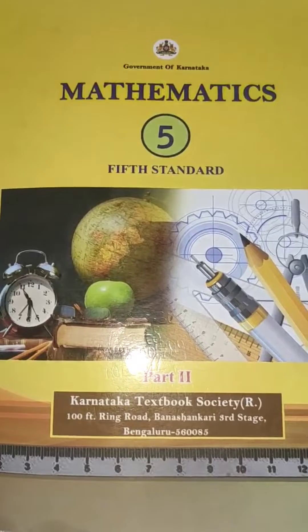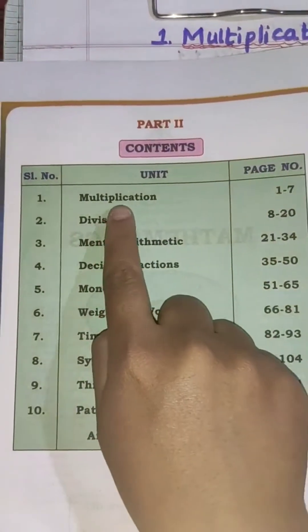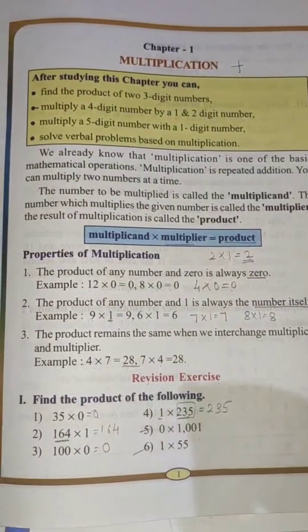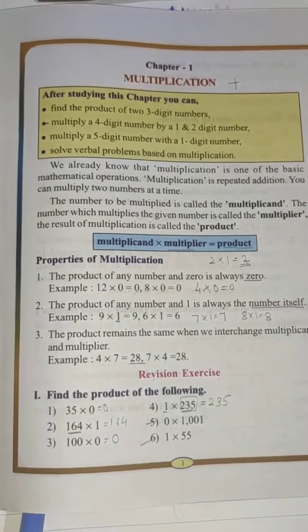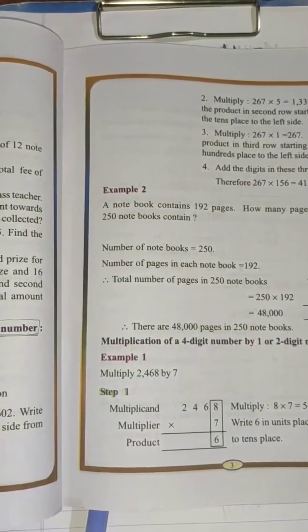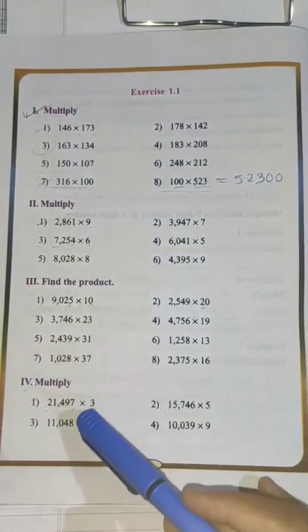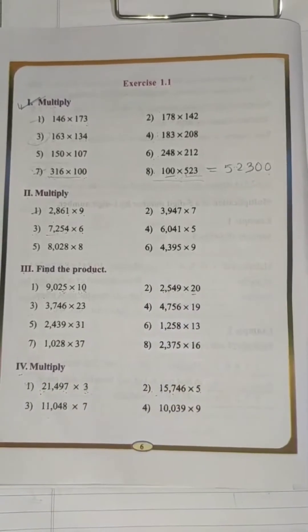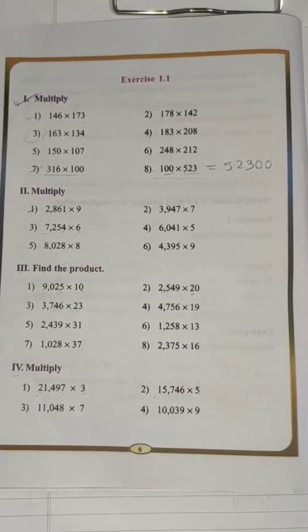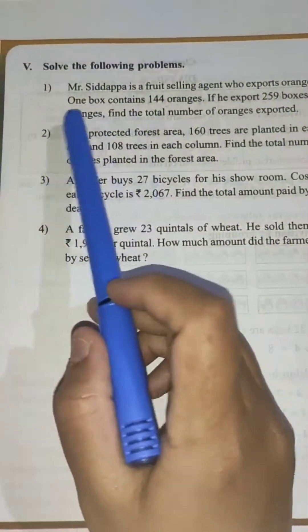Hi, hello children, how are you all? Welcome back to my class. Today we are going to continue our same lesson of maths, that is multiplication. Children, you already know what multiplication is, the properties of multiplication, how to do multiplication. We have done the revision exercise, completed some examples from the textbook, and solved Exercise 1.1 — the first, second, third, and fourth main. Today we are going to solve the fifth main of Exercise 1.1.